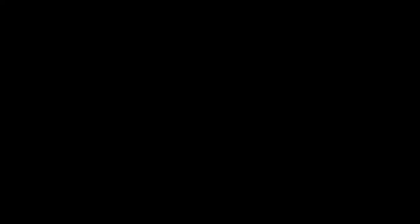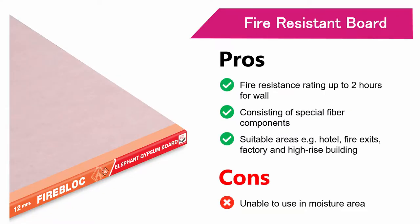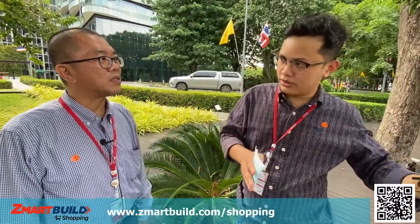The last one is the red one. The red color means the board has fire resistance properties. You can use this one to make a wall for your room — that wall can resist fire for a maximum of two hours. So it will stop the spread of fire from one room to another for up to two hours.